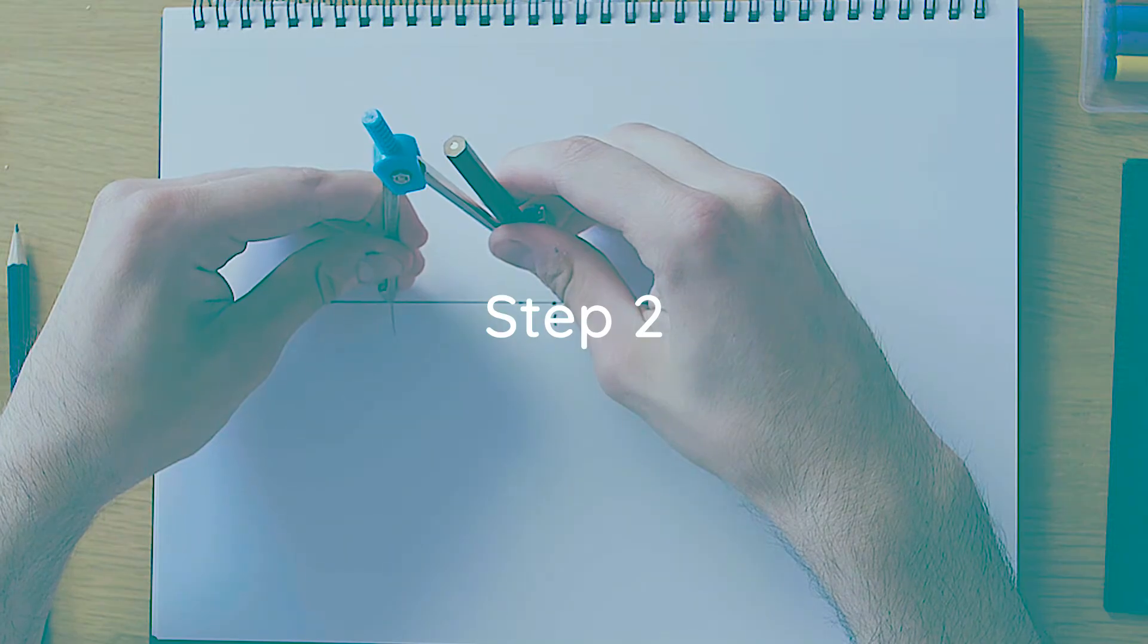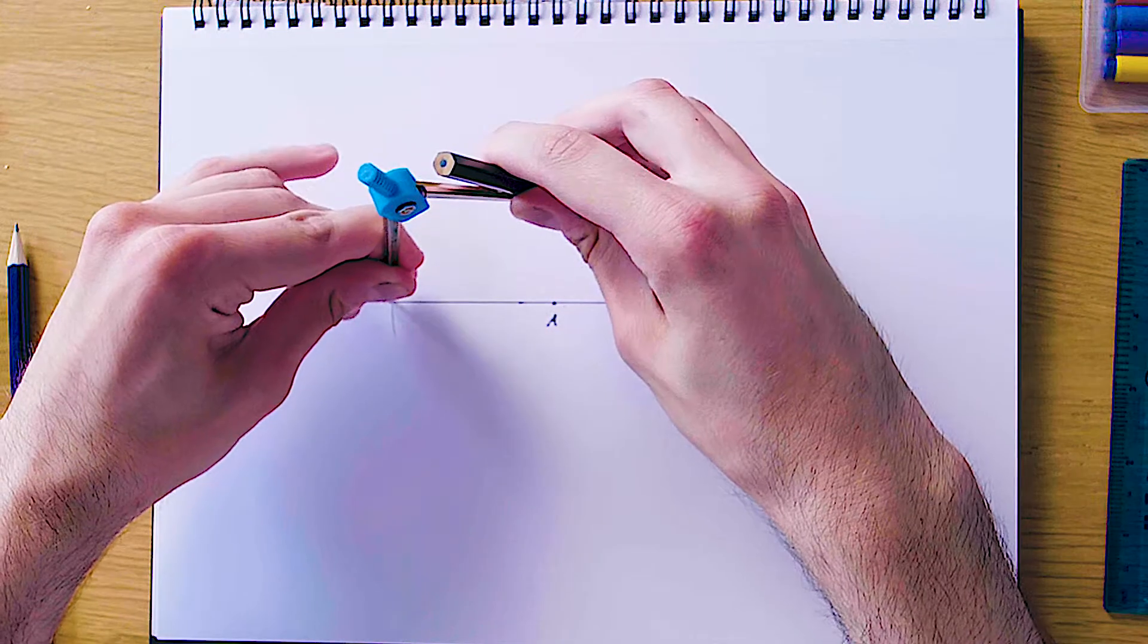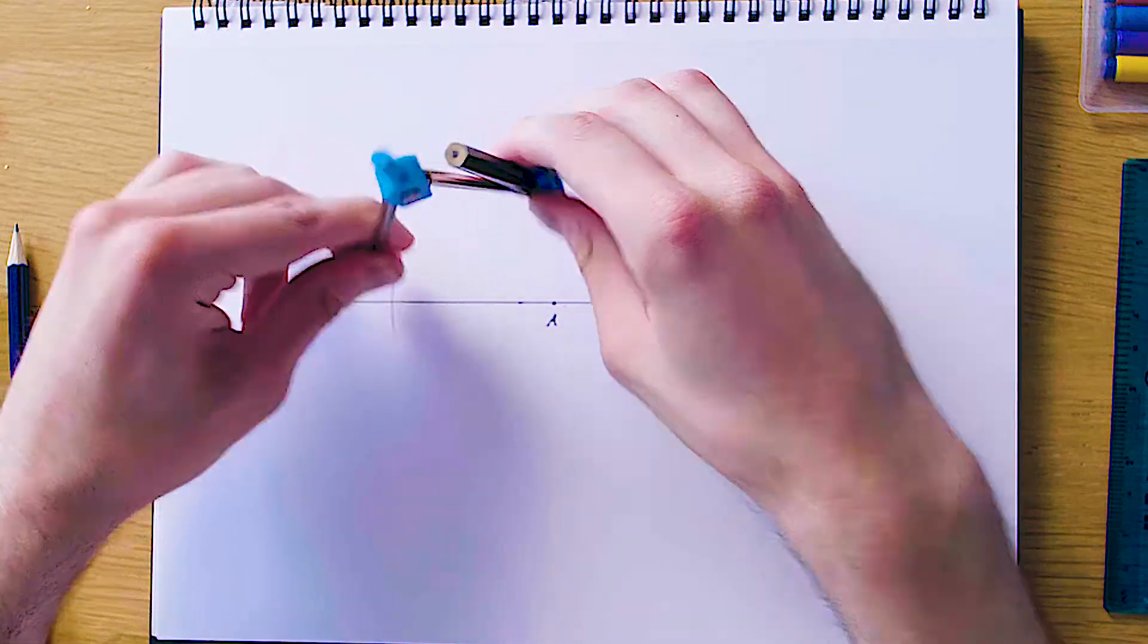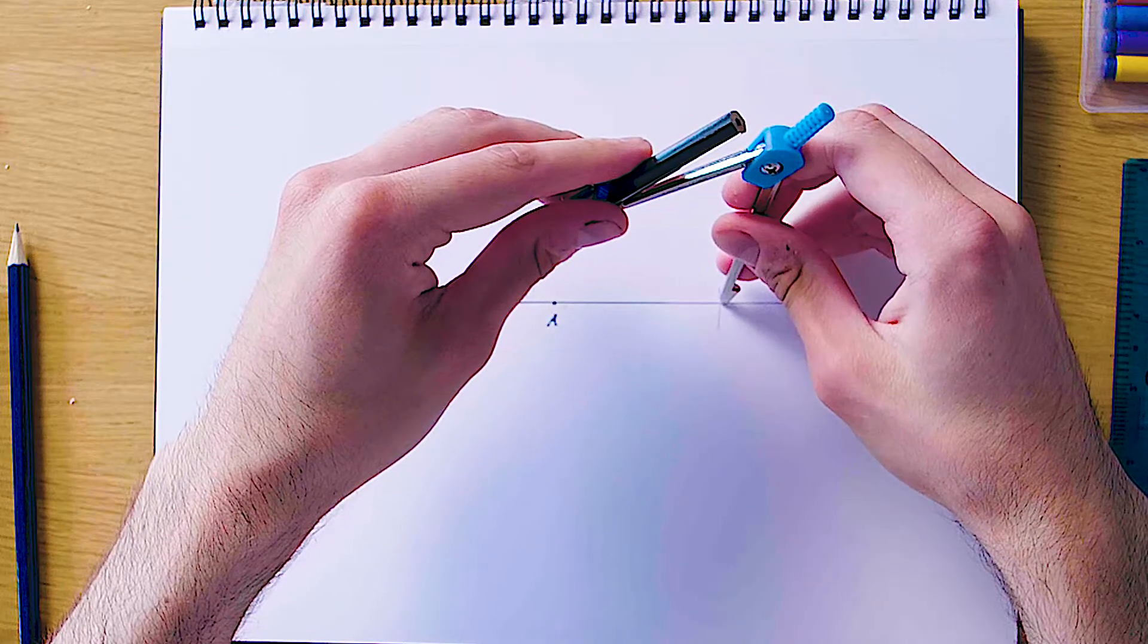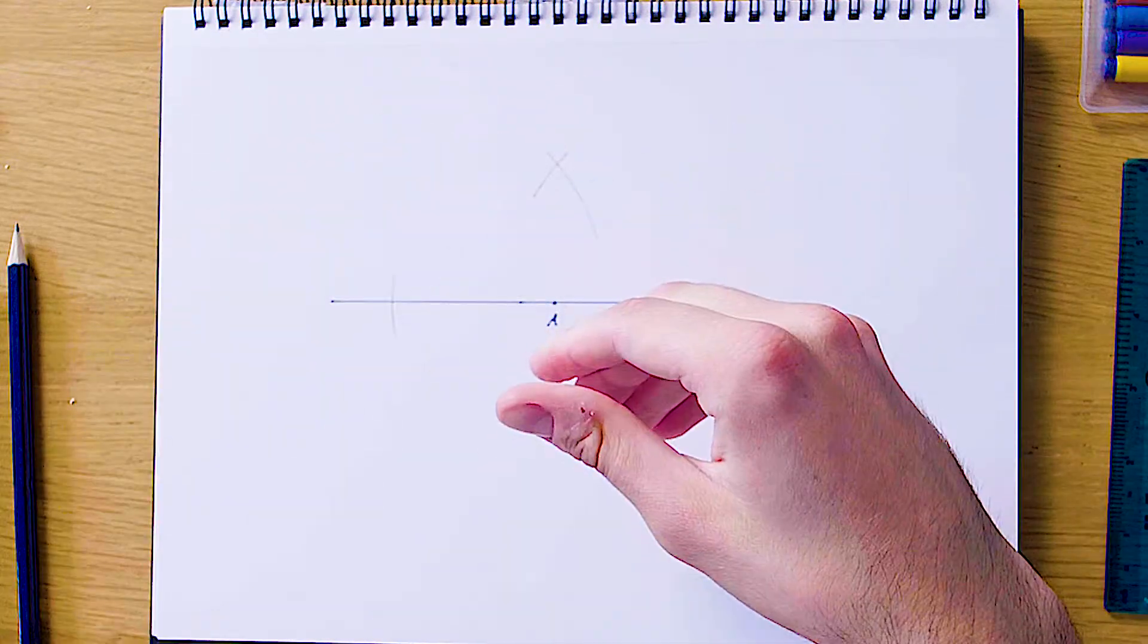Now our second step is to swing two arcs again from these new intersections so that they cross somewhere above A. We're just going to swing it here and from the right as well so they cross somewhere above A.